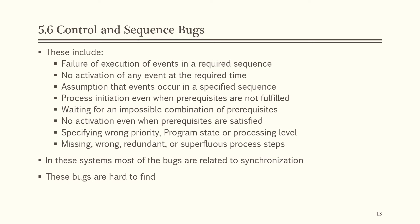Control and sequence bugs include: failure to execute events in a required sequence; no activation of any event at the required time; assumption that events occur in a specified sequence; process initiation even when prerequisites are not fulfilled; waiting for an impossible combination of prerequisites; no activation even when prerequisites are satisfied; specifying wrong priority, program state, or processing level; and missing, wrong, redundant, or superfluous process steps. Most bugs in these systems relate to synchronization and are hard to find.